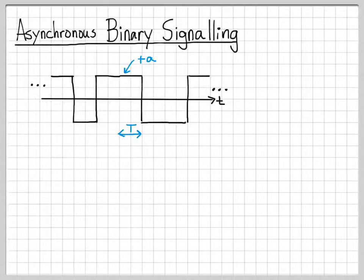It toggles between two values - that's why we call this binary signaling. It can either be a positive pulse with amplitude +a or a negative pulse with amplitude -a. The values have the same magnitude but different signs. More specifically, this is called polar or antipodal signaling because it toggles between negative values of each other: positive a and negative a.